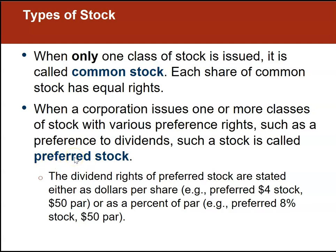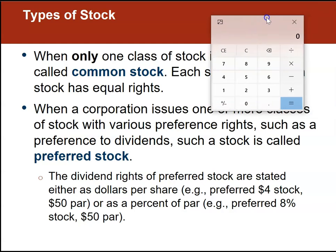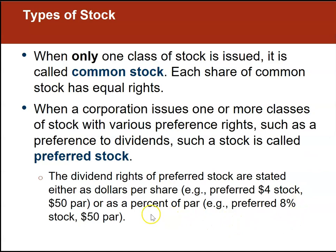Interestingly, preferred stockholders are not allowed to vote, while common stockholders are. The dividend rights of preferred stock are stated either as dollars per share or as a percentage. For example, 8%. So we might say $50 par, 8% preferred stock. Using a calculator, $50 par times 0.08 equals $4. So for each share of $50 par preferred stock, dividend rights equal $4 per share.